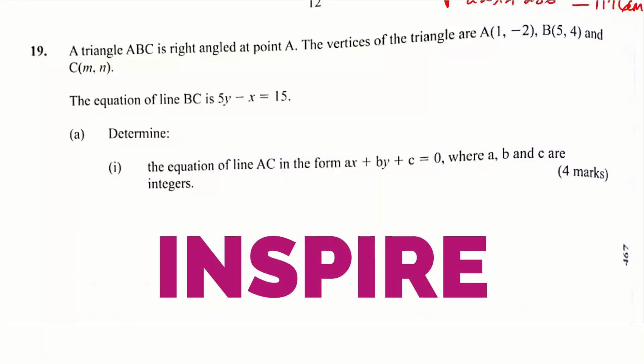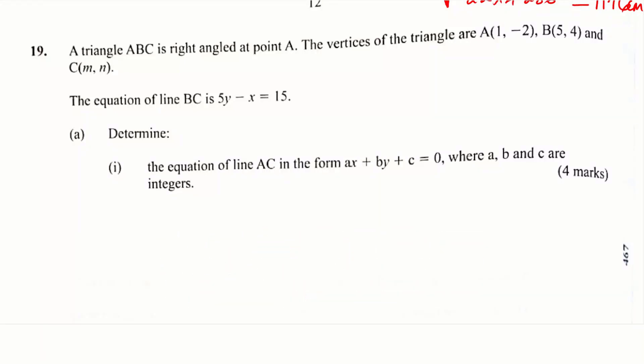Question number 19. A triangle ABC is right-angled at point A. The vertices of the triangle are A(1, -2), B(5, 4), and C(M, N). The equation of line BC is 5Y minus X equals 15. Determine the equation of line AC in the form AX plus BY plus C equals 0, where A, B, and C are integers.